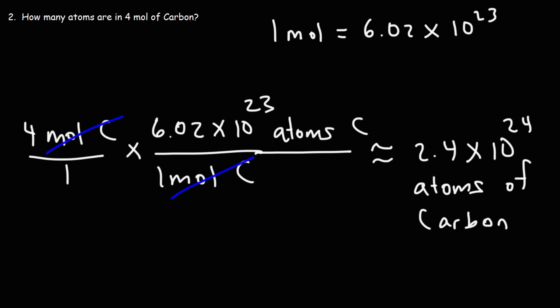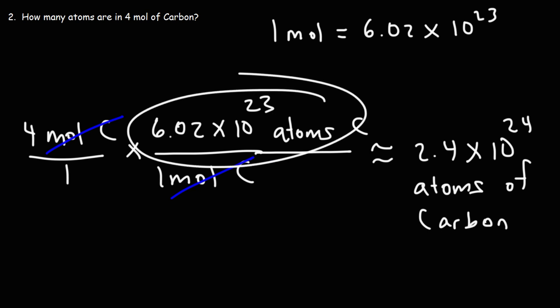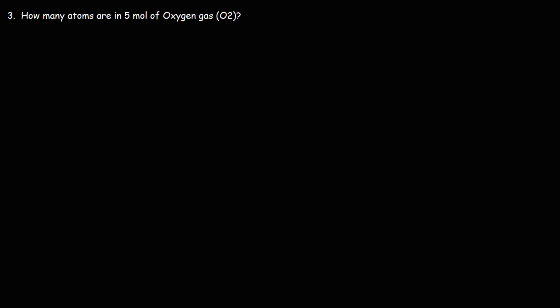So that's how you convert from moles to atoms — simply multiply the number of moles by Avogadro's number, 6 times 10 to the 23. Number 3: how many atoms are in 5 moles of oxygen gas? This problem is similar to the last one, but a little different.